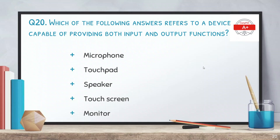Question number 20: which of the following answers refers to a device capable of providing both input and output functions? The options are microphone, touchpad, speaker, touch screen, and monitor. The correct answer is touch screen, because we can use the touch screen both to view content and to give input by touching the screen, such as on touch screen smartphones.